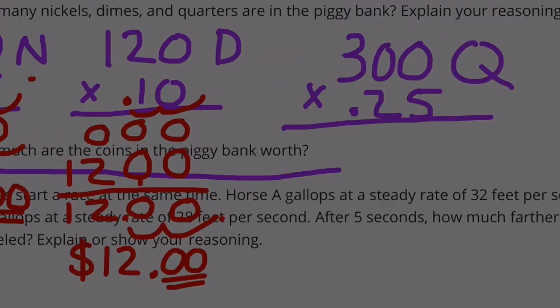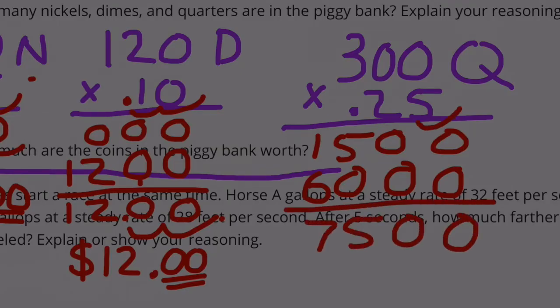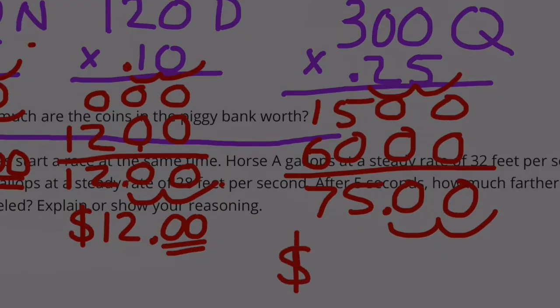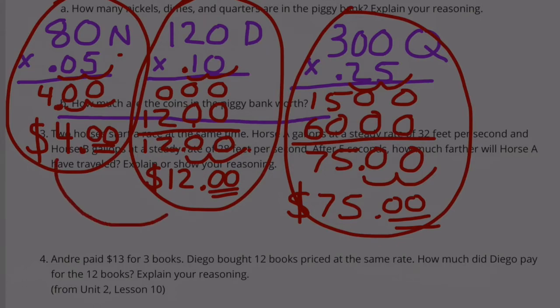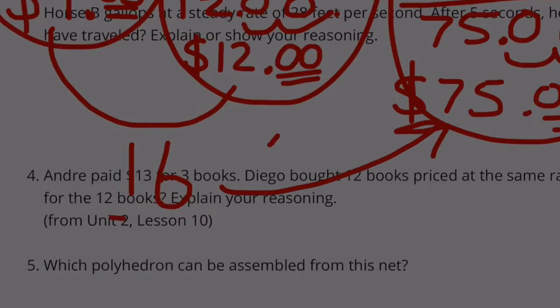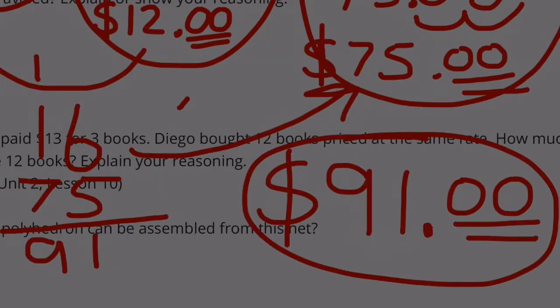So, $4 worth of nickels, $12 worth of dimes, $75 worth of quarters. $4 plus $12 is $16. $16 plus $75 is $91. The value of all the coins totals $91.